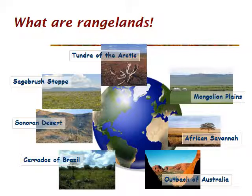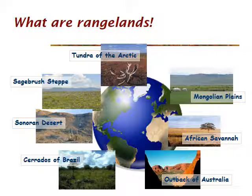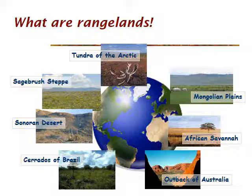Some things you've got to understand about rangelands before you can really take a stab at management. One is that rangelands are incredibly diverse places — they're all over. Half of the earth is range and it comes in a lot of different forms: the tundra in the Arctic to the African savannah, the outback of Australia, the Sonoran Desert and Sagebrush Steppe right here in the U.S. We use the same kinds of management tools and techniques on all of those diverse lands.